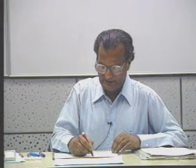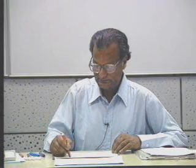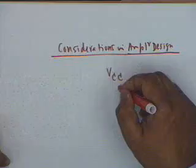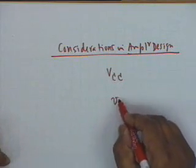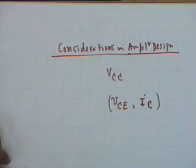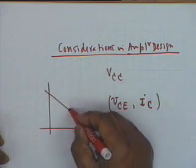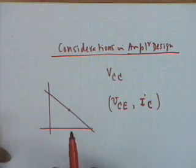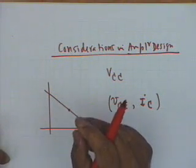What are the considerations in amplifier design? As shown with the common emitter characteristics, the Q point of the transistor is critical. If the Q point is at a wrong point, you get distortion in the amplification. Therefore the transistor must be biased properly — the choice of VCC and the biasing resistors must establish a particular VCE and a particular I_C. Establishing this Q point at an appropriate position is an extremely important task, so the first consideration in amplifier design is biasing.